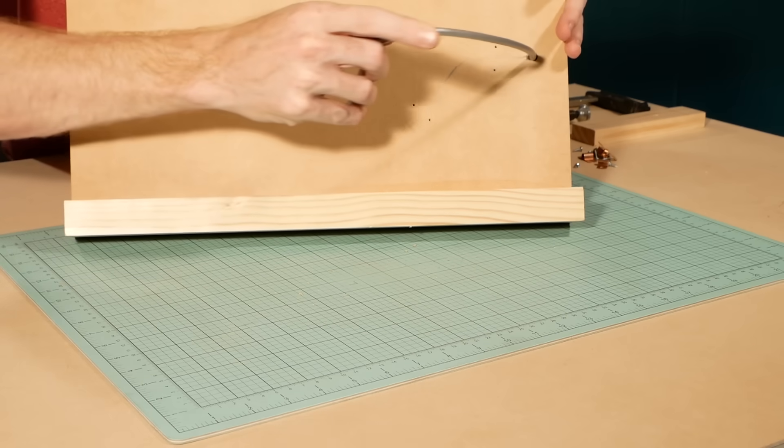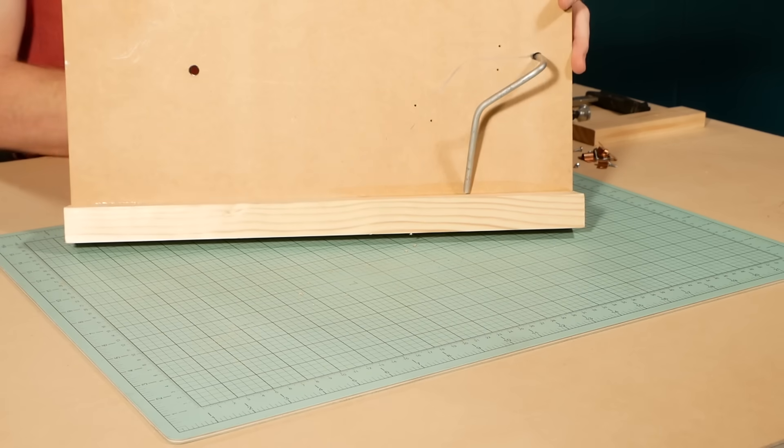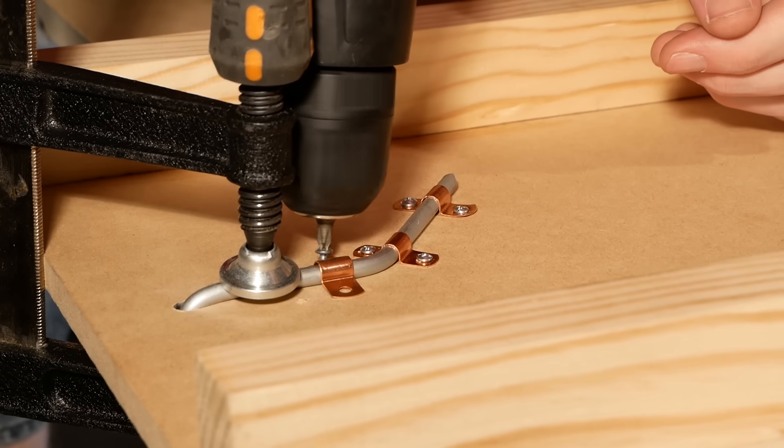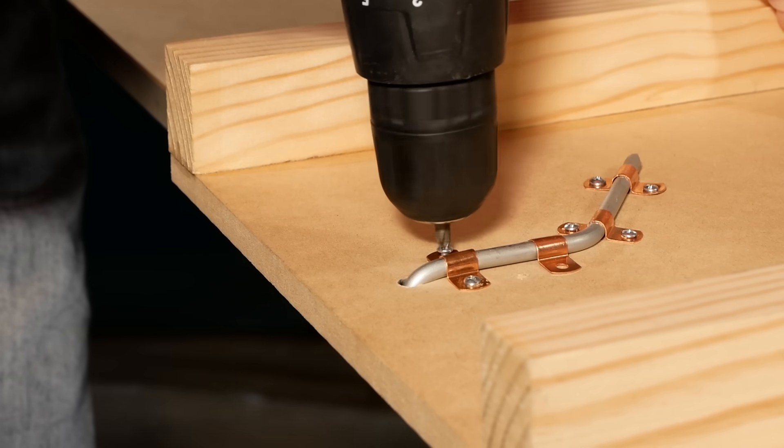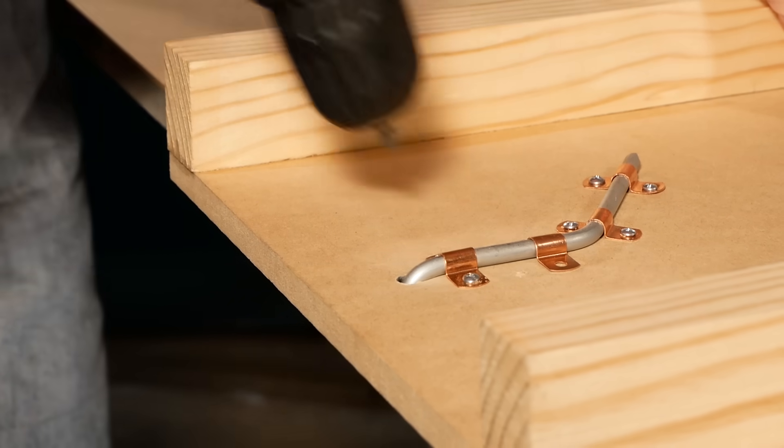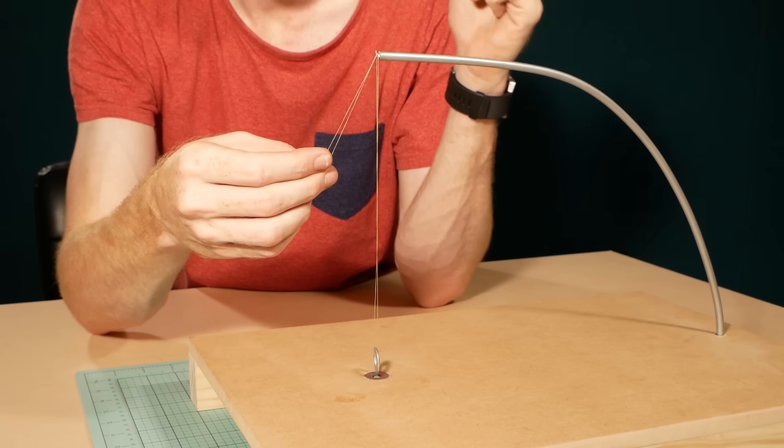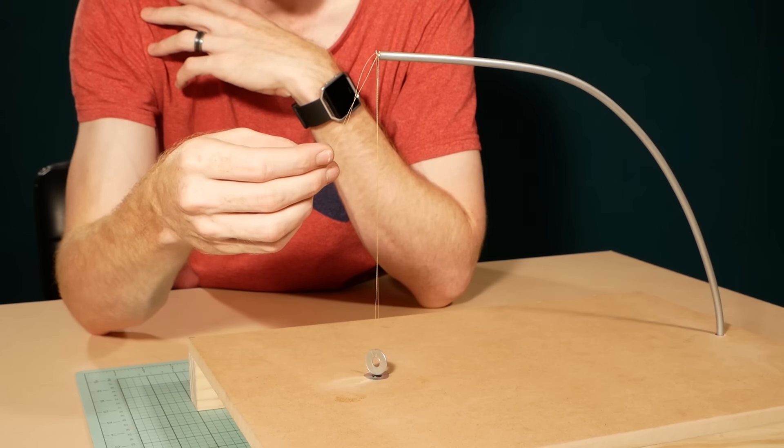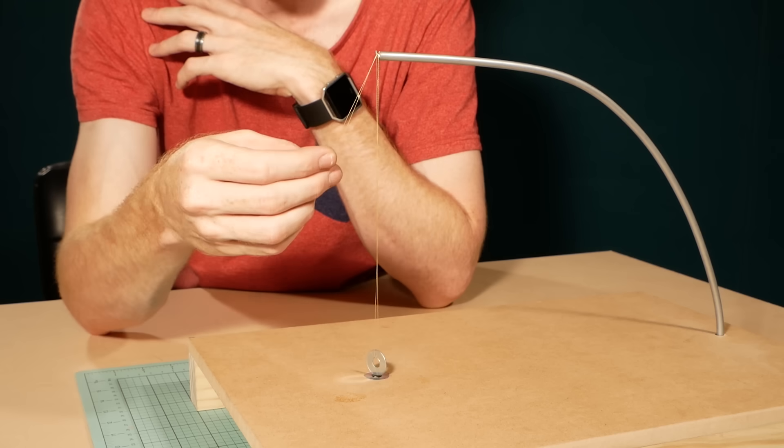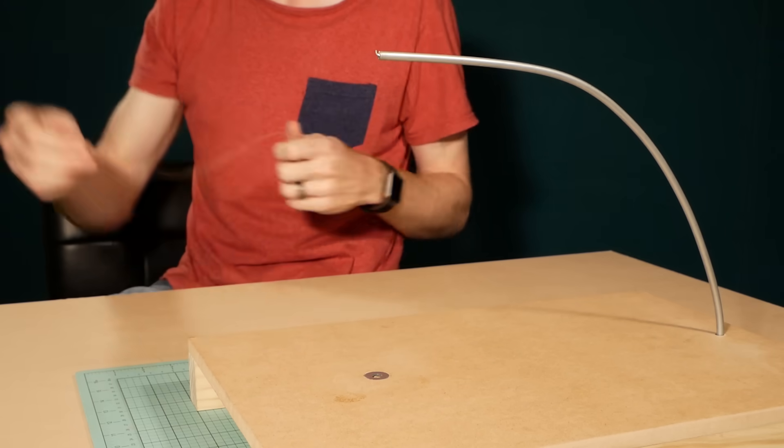Now we can permanently fix the rod onto the base using the saddle clips again, plus a couple of extra clips just to ensure everything is solid. Test the position once more with the small weight on a string. If it doesn't hang perfectly over the hole you can gently push and bend the rod a little to make sure it's centered again.